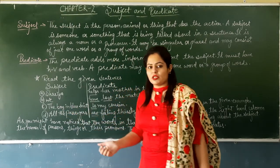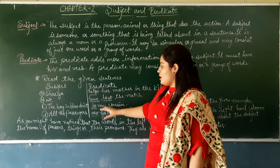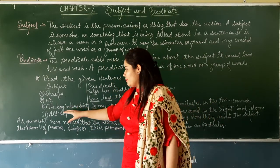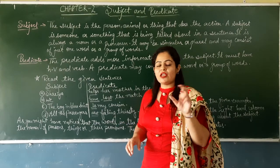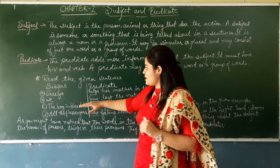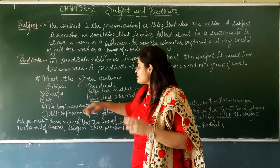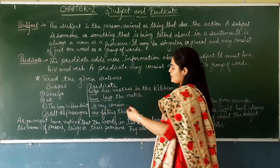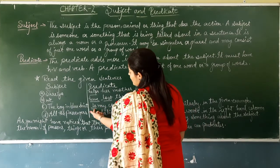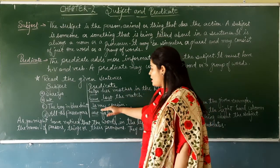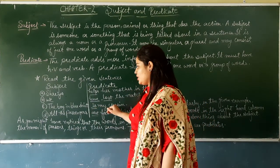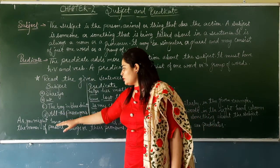Third example — 'The boy in blue shirt.' Jo ladka hai blue shirt mein — woh kya hai? Noun. Isliye yeh ho gaya hamara subject. Predicate hai: 'is my cousin.' 'Is' yahan aa gaya hamara helping verb, to yeh hamara predicate ho gaya.